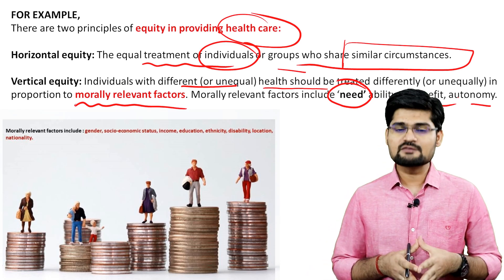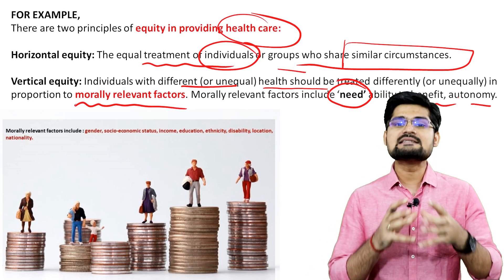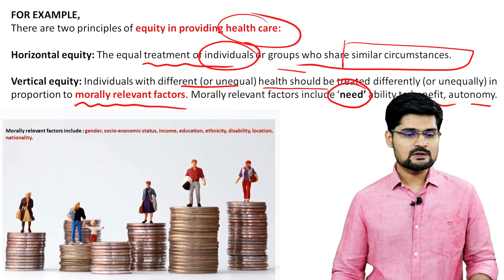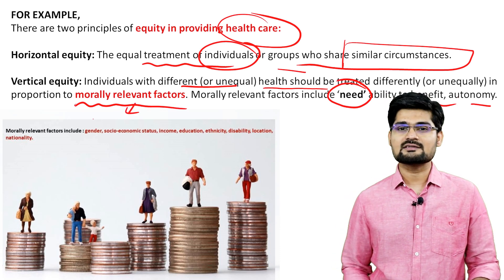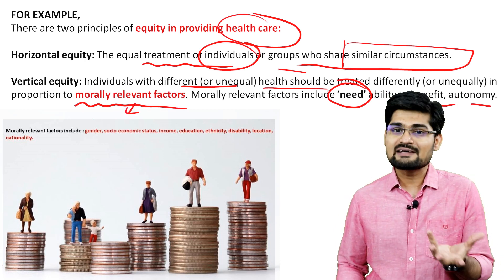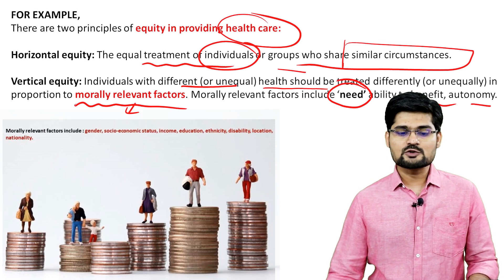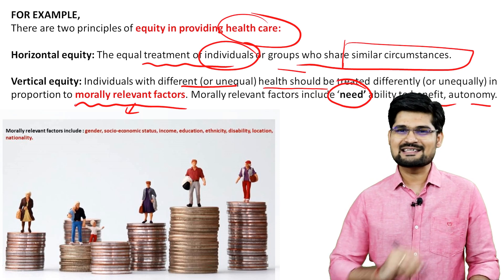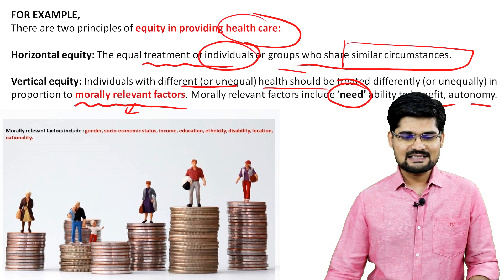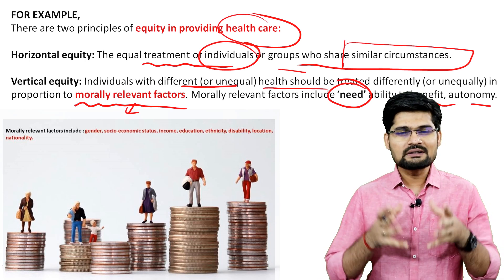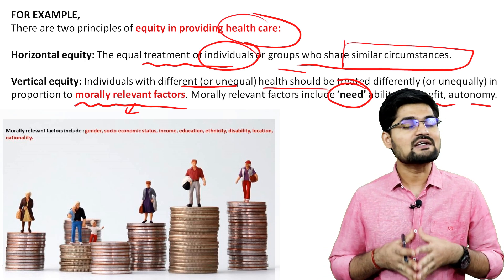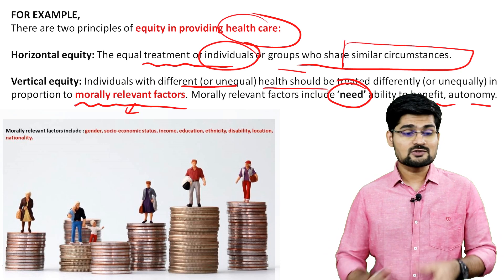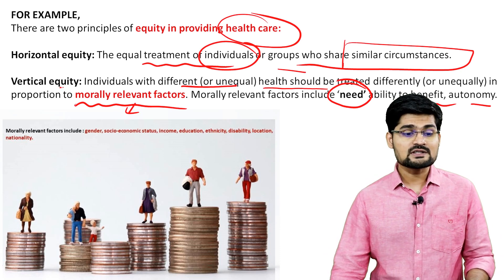There are certain morally relevant factors we need to consider when we talk about equity. These include gender, socio-economic status, income, education, ethnicity, disability, location, and nationality. All these things are very important when we talk about equity in terms of vertical equity.